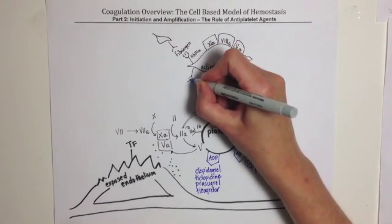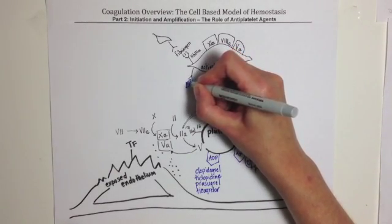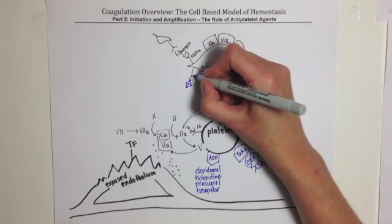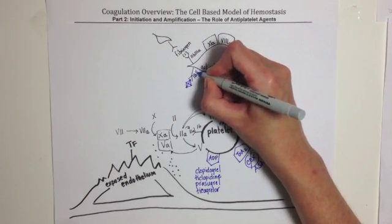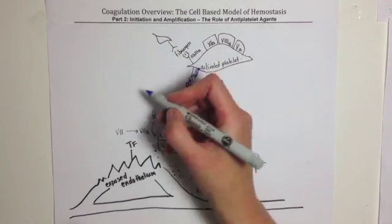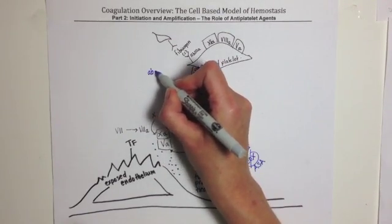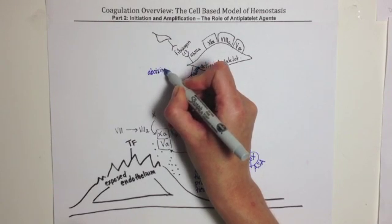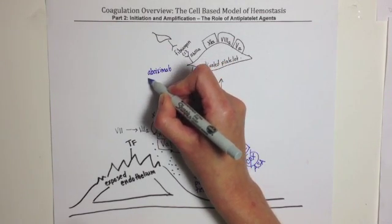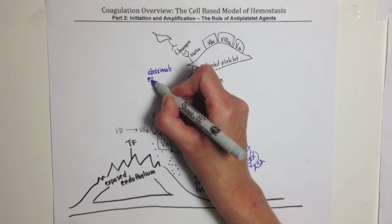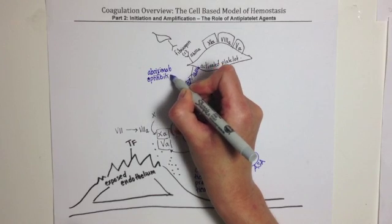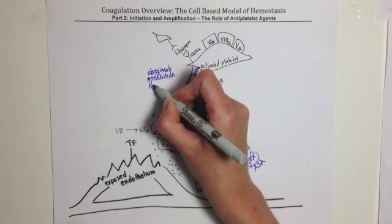However, administering a 2B3A receptor antagonist binds directly to the 2B3A receptor, and these agents are abciximab, integrilin or eptifibatide, and tirofiban.